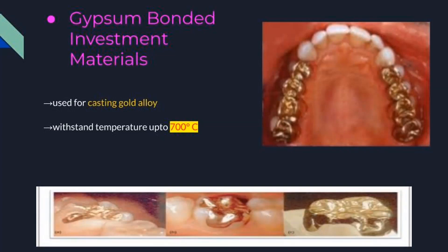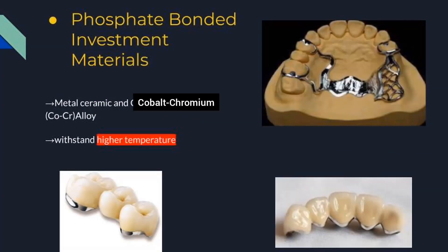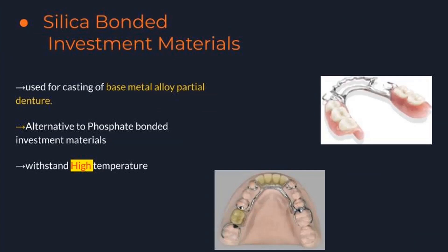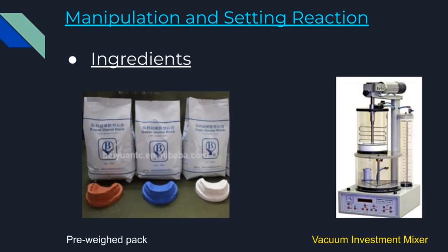Gypsum bonded investment materials are used for casting gold alloy and can withstand temperatures up to 700 degrees Celsius. Phosphate bonded investment material is used for metal ceramic and cobalt-chromium alloy; they can withstand higher temperatures. Silica bonded investment materials are used for casting of base metal alloy and partial dentures; it is an alternative to phosphate bonded and can withstand high temperatures.